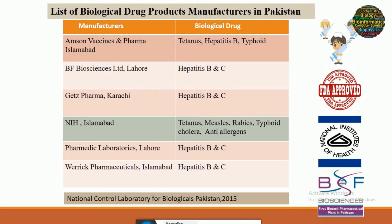In Pakistan we have different companies that produce vaccines. These include Emson Vaccines and Pharma in Islamabad, which develop vaccines against tetanus, hepatitis B, and typhoid. BF Vaccines Limited in Lahore produces hepatitis B and C vaccines. Zeta Pharma in Karachi produces hepatitis B and C vaccines. The NIH Paramedical Laboratories and various pharmaceutical industries also develop vaccines against hepatitis B and anti-allergens.